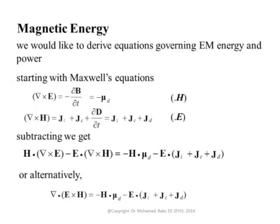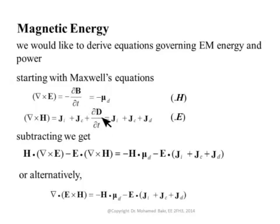From Ampere's law, curl H equals the current enclosed, which can be an impressed current source — like the current flowing through an antenna — or conduction current, which is equal to σE. But Ampere's law in its current form is not complete, because in the dynamic case, when everything is changing with time, curl H equals the impressed current plus the conduction current σE, plus another term called displacement current, which is ∂D/∂T. This is really the current flowing inside capacitors — inside capacitors there is only displacement current, no conduction current. We give this the symbol JD.